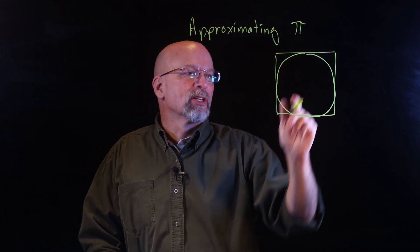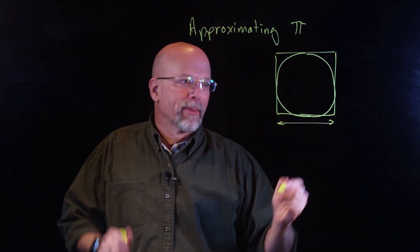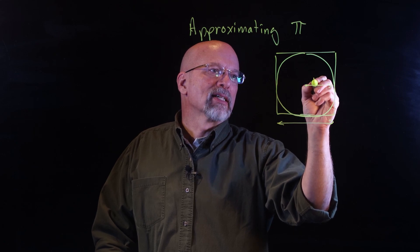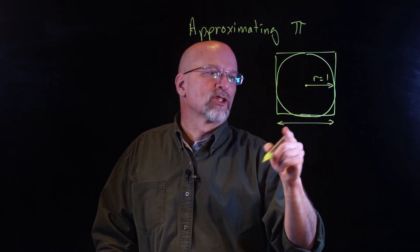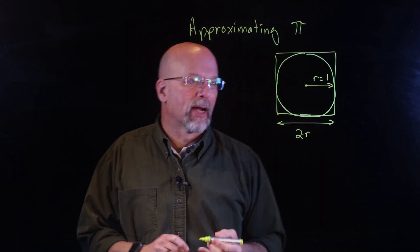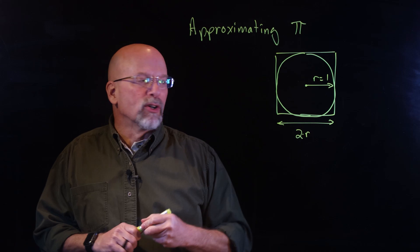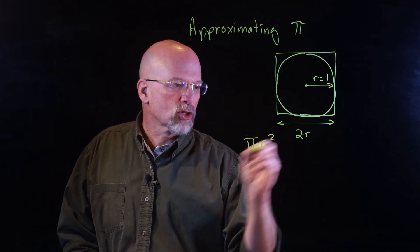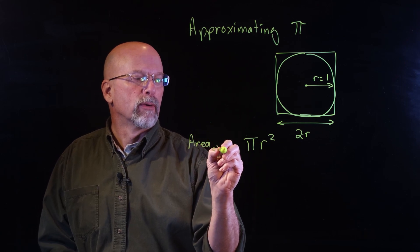So the dimension of this square — let's say the radius is equal to one, which means the dimension of one side of this square is equal to two R. The area of the circle is pi R squared.